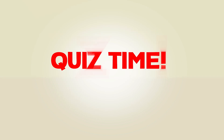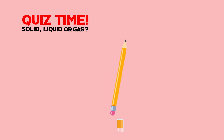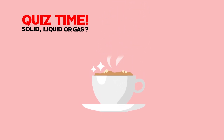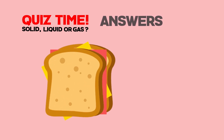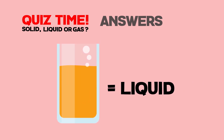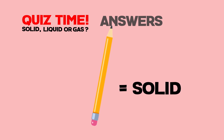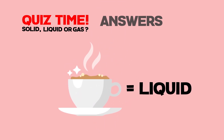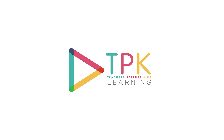It's quiz time! Can you tell if these objects are solid, liquid, or gas? Sandwich, juice, pencil, smoke, coffee. Did you guess it correctly? Let's have a look. Sandwiches are solid. Juices are liquid. Pencils are solid objects. Smoke is gas. Lastly, coffee is also liquid.